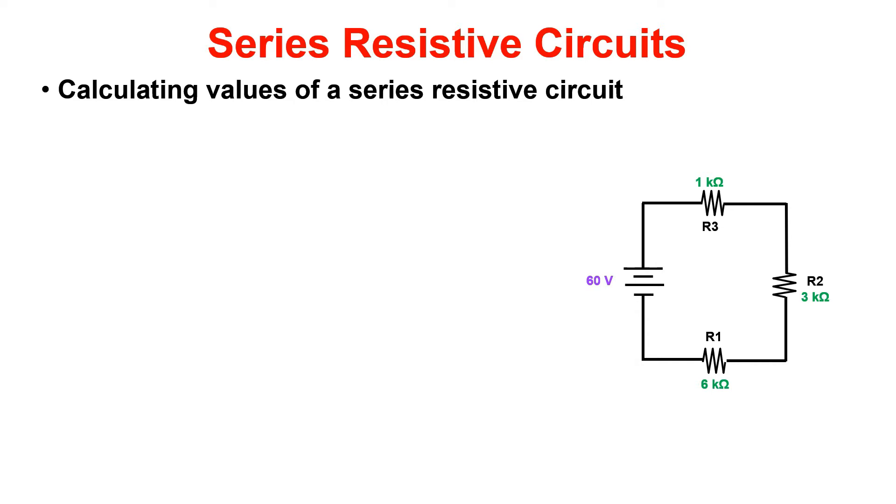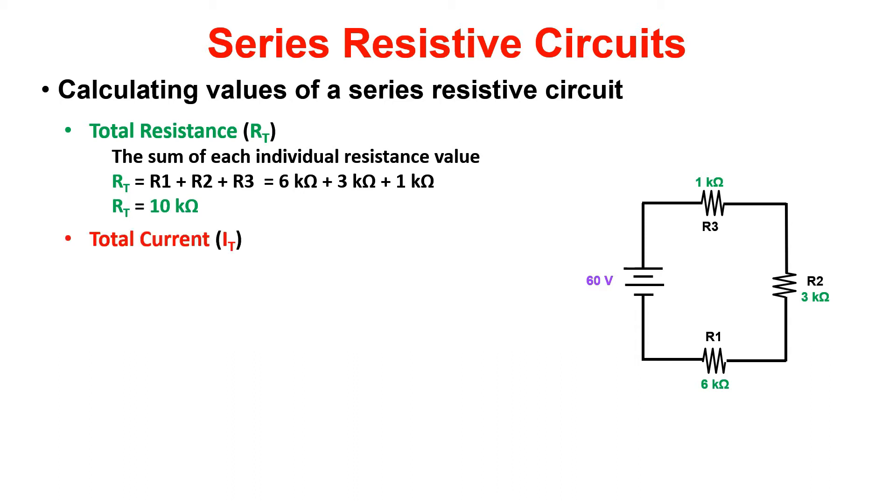To calculate the total current of our series circuit, we add the individual resistor values together. This is now our RT. To find IT, we divide our applied voltage by the total resistance. This is our IT, 6 milliamps.